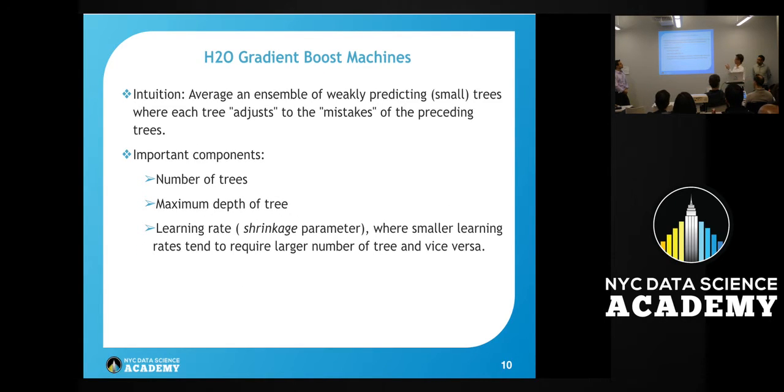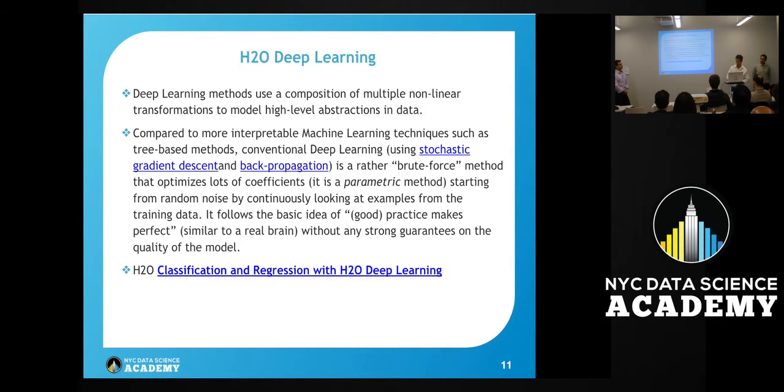We also looked at gradient boosted machines using H2O. Parameters we chose to tune were number of trees, maximum depth, and learning rate. We're also starting to look at H2O deep learning. We're just now tuning parameters and setting up grid search to find the best parameters. From my experience, it is kind of difficult to tune deep learning within H2O.